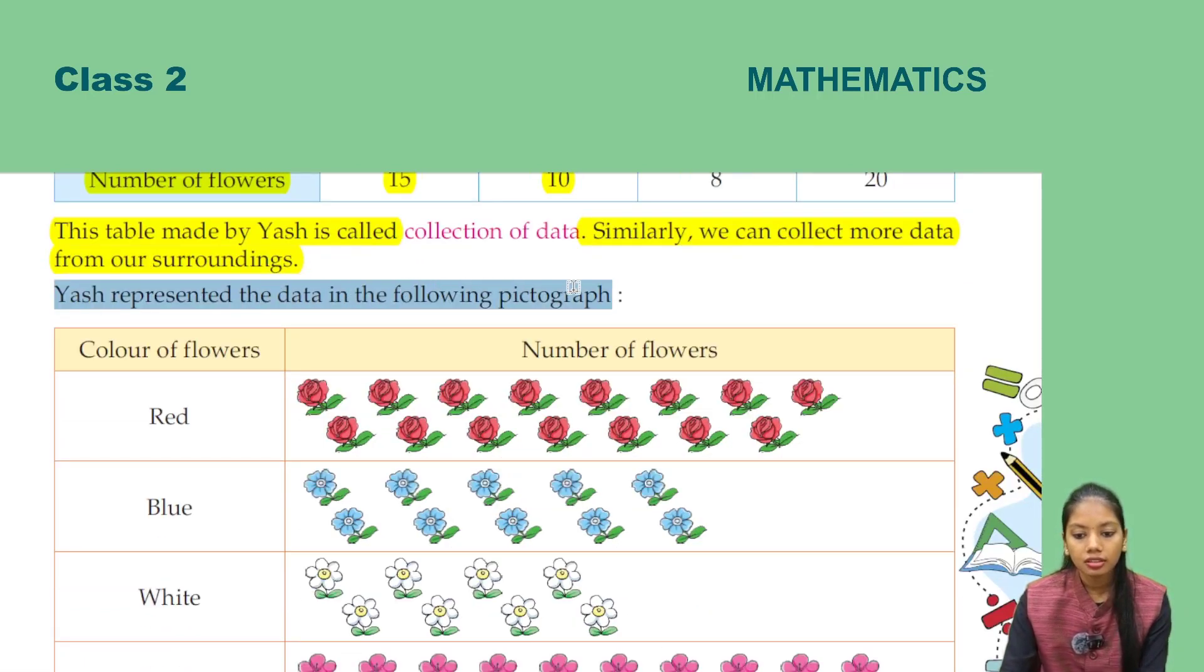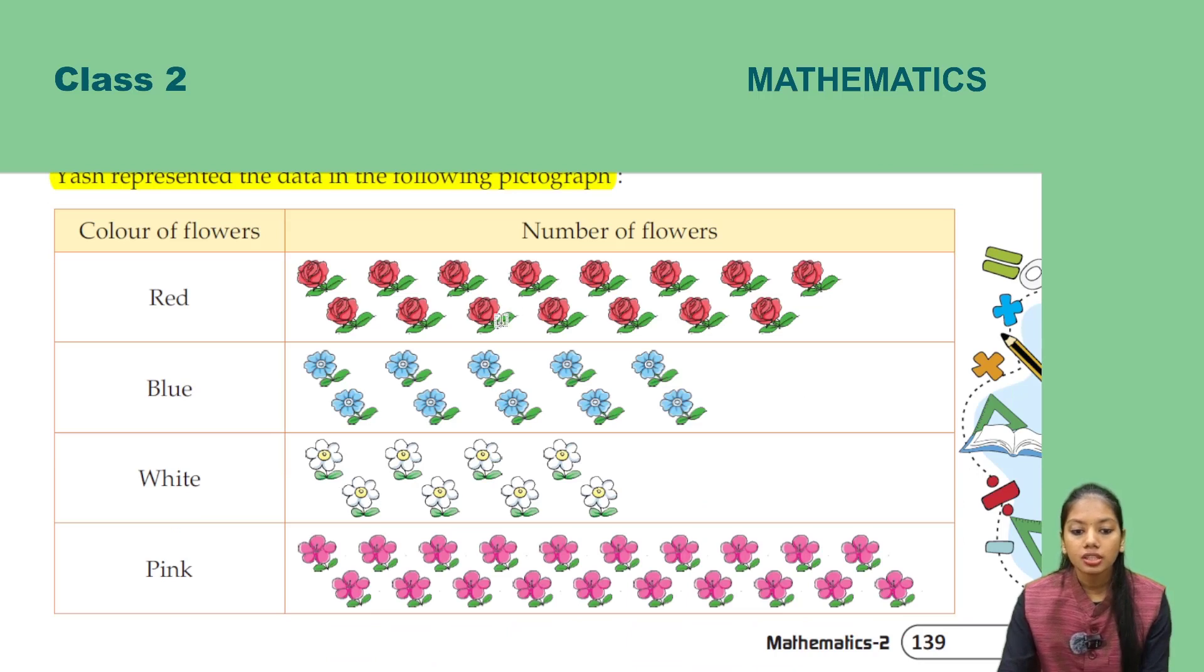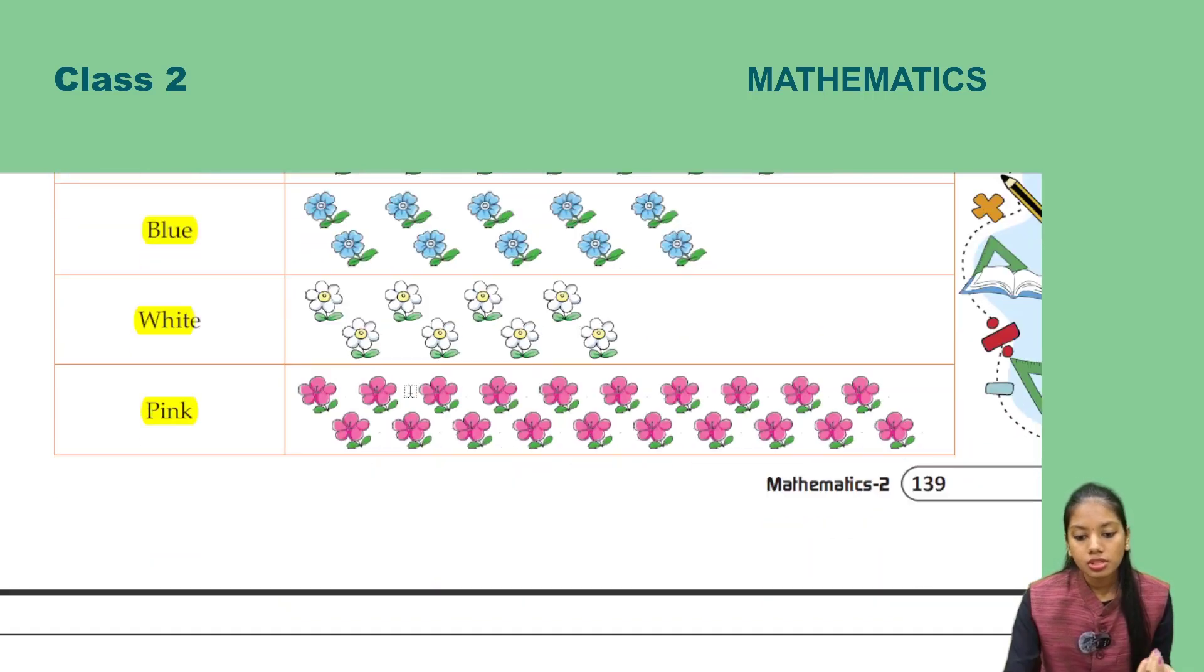Yash represented the data in the following pictograph. Yash has this data in the pictograph. He has the color of the flowers: red, blue, white, pink. He has the number of flowers to draw the picture. So he has the roses, red flowers, blue flowers.